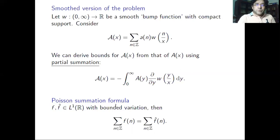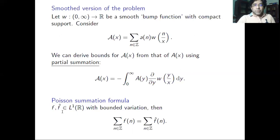One basic tool in estimating sums of this type is the Poisson summation formula. If f is in L¹, its Fourier transform is also in L¹, and both are of bounded variation, then the sum of f(n) over all integers equals the sum of the Fourier transform evaluated at integers.